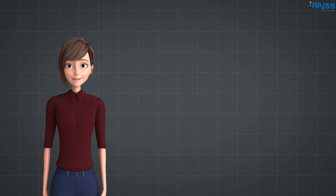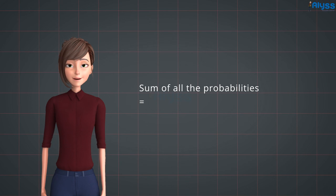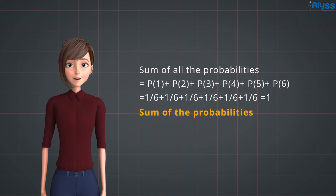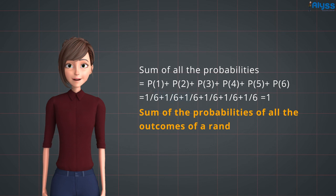Now, let us find out the sum of the probability of all outcomes. If we add all the probabilities, we get 1. It means the sum of the probabilities of all the outcomes of a random experiment is always 1.